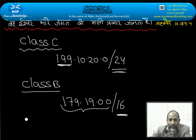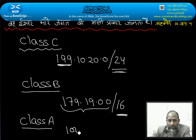If Class A, classful network IDs of Class A have a masking of 8 bits.